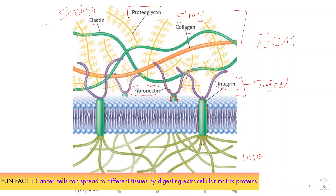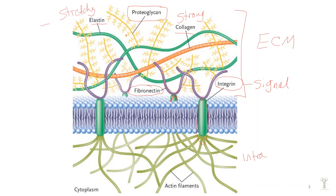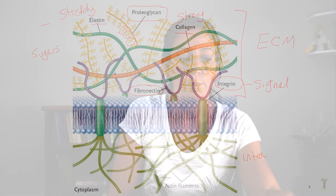Lastly, we have proteoglycans. Notice that there are little carbohydrate groups — or sugars — sticking out from the central protein. The sugars connected to the protein make this a glycoprotein. Glycoproteins play an important role in attracting water molecules, so one of the main purposes of proteoglycans in our tissues is to hydrate them. We have a lot of proteoglycan in our skin and our joints.